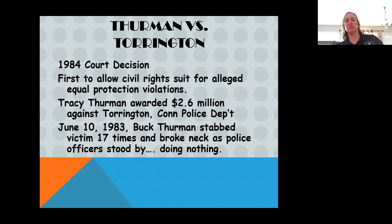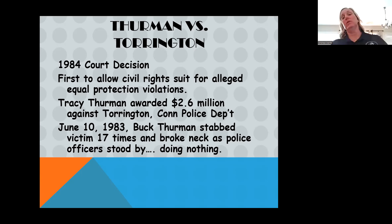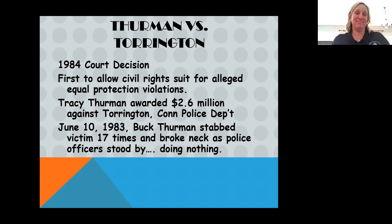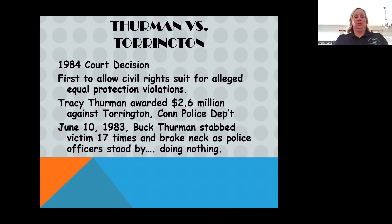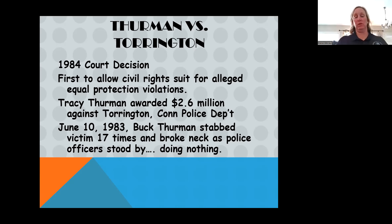In 1983, she left him. She moved from Virginia to Torrington, Connecticut with their child with some friends. He tracked her down to Connecticut and started standing outside of her work, outside of her apartment, showing up various places. She made multiple reports to the Torrington, Connecticut police department and they basically did nothing — 'well, you're married to him, that's really all we can tell you.' June 10th, 1983, he stabbed her 17 times and broke her neck while law enforcement did nothing. She was partially paralyzed with an extensive amount of injuries. She successfully sued the Torrington police department in the first civil rights suit for equal protection and won $2.6 million. That has been a huge turning point in how law enforcement handles domestics.